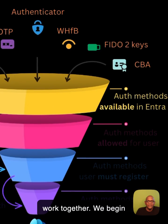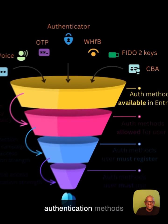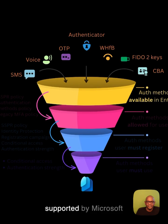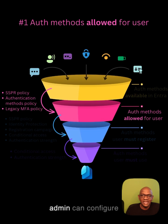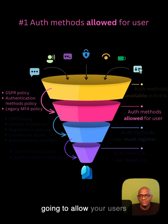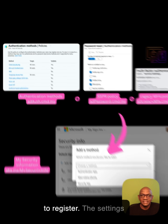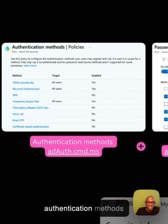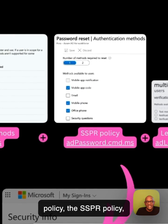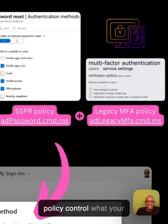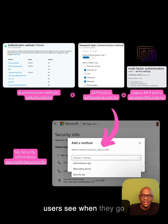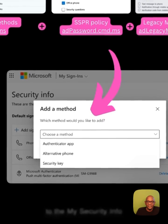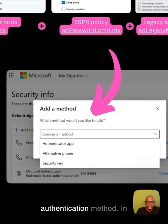We begin with all of the authentication methods supported by Microsoft Entra. Next, you as the admin can configure policies to define the methods that you are going to allow your users to register. The settings you define in the authentication methods policy, the SSPR policy, and the legacy MFA policy control what your users see when they go to the My Security Info page and try to add an authentication method.